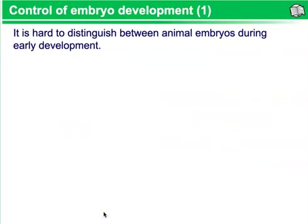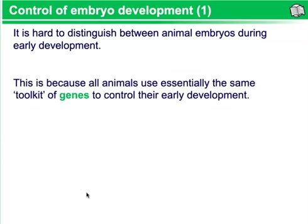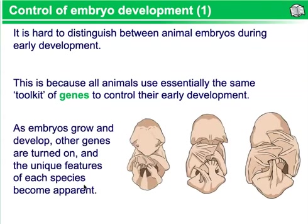Control of embryo development. It is hard to distinguish between animal embryos during early development. This is because all animals use essentially the same toolkit of genes to control their early development. As embryos grow and develop, other genes are turned on, and the unique features of each species become apparent.